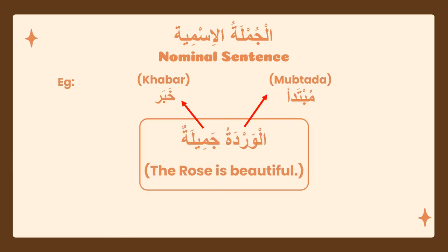Let's look at an example of جملة الإسمية — the nominal sentence. الوردة جميلة, meaning 'the rose is beautiful.' الوردة is the subject, مُبْتَدَأ, and جميلة is the خَبَر, the predicate.